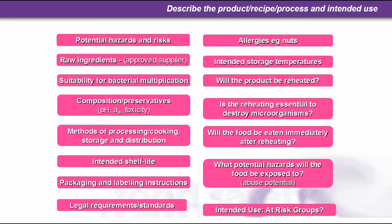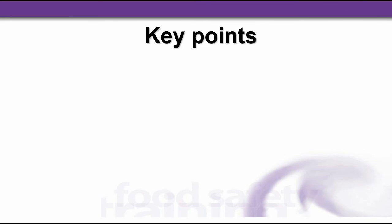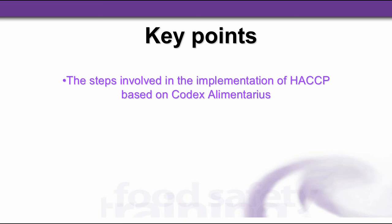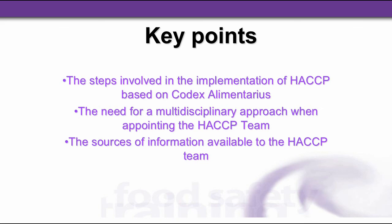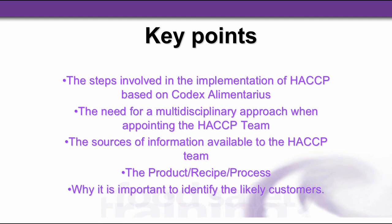Consider the intended use: is the product intended for any at-risk groups, such as the elderly, the very young, people who are already ill, pregnant women, or the immunocompromised? Key points covered in this module include the 12 steps involved in HACCP implementation based on Codex Alimentarius, the need for a multidisciplinary approach when appointing the HACCP team, the sources of information available, the product, recipe, and process description, and why it's important to identify the likely customers.